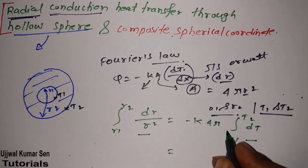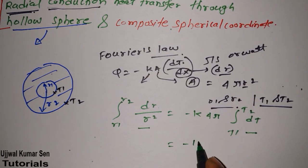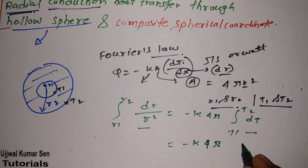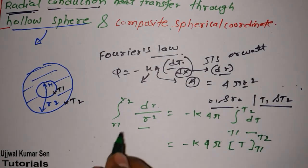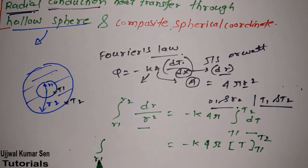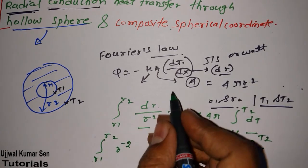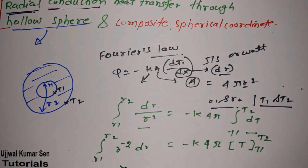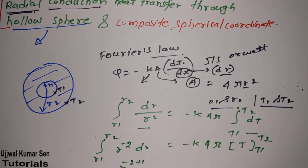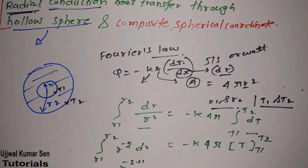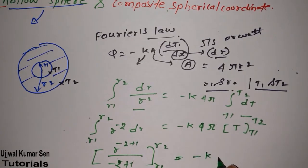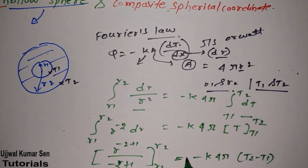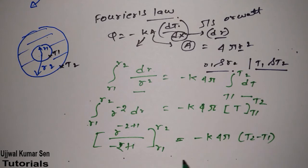Integrating the left side is quite simple. We integrate from r1 to r2, and the integral of r to the power minus 2 gives r to the power minus 2 plus 1, which is minus 1. The right side gives k times 4π times (T2 minus T1).